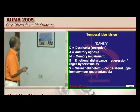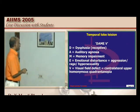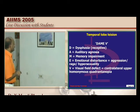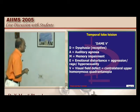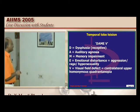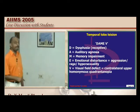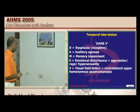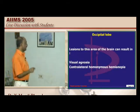For temporal lobe lesions, remember the mnemonic DAME V: dysphagia, auditory agnosia, memory impairment, emotional disturbance with aggression, rage, and hypersexuality, and visual field defect — contralateral upper homonymous quadrantanopia.